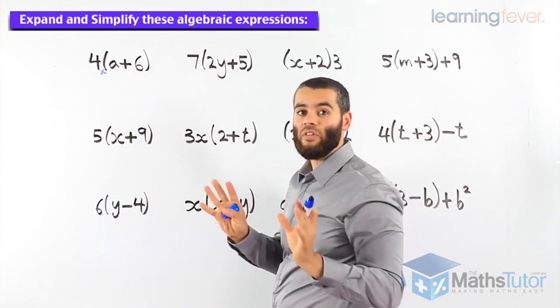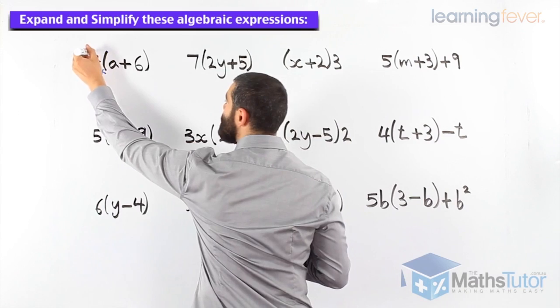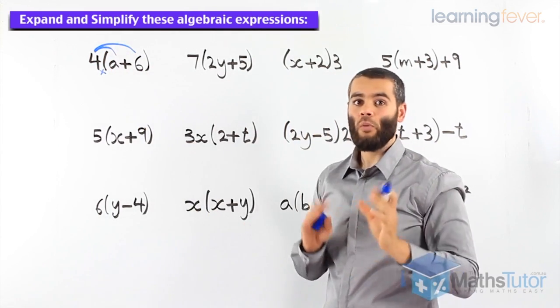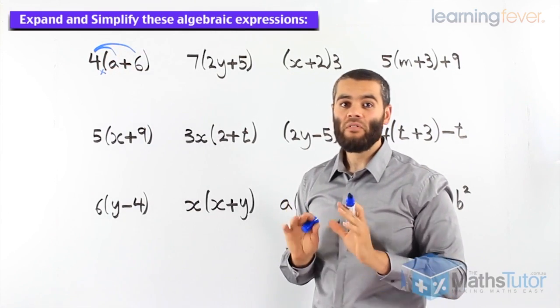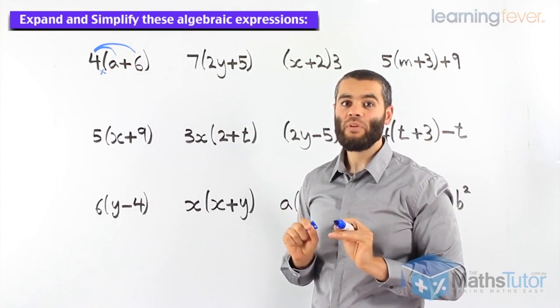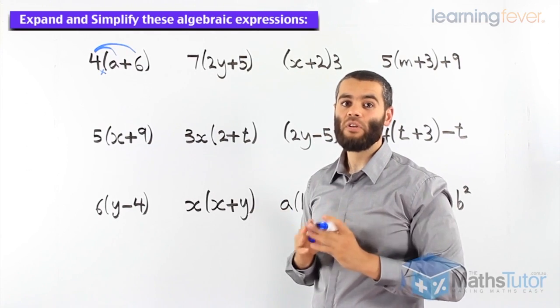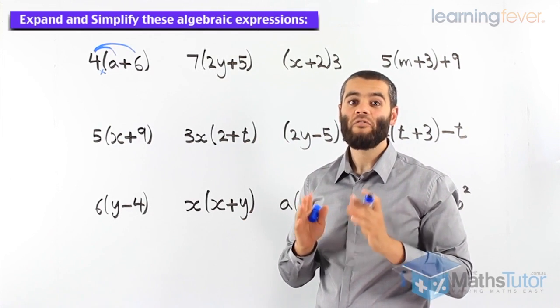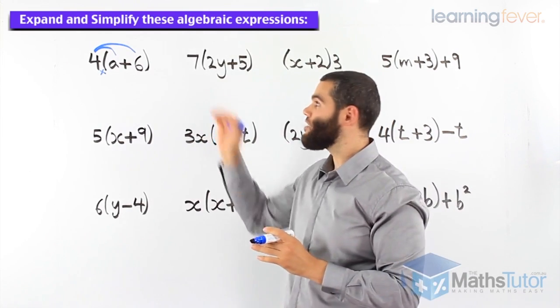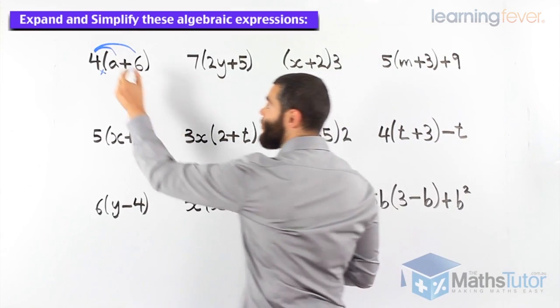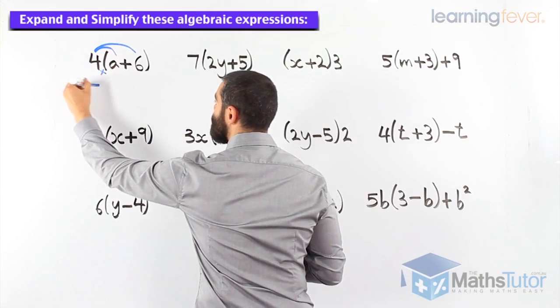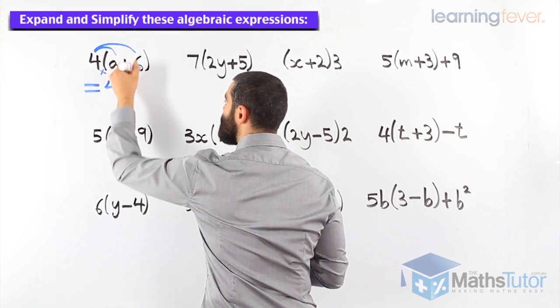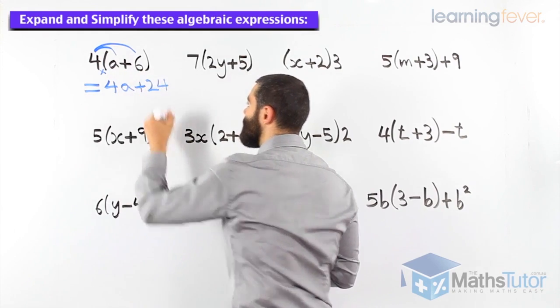Four multiplied by everything inside, meaning that four times a, and four times positive six. I always tell students, show the arrows. It's very, very helpful. These little bits and pieces of working out make it much easier later on when you come to revise, and even if you make a mistake, you may get marks for showing your working out. Those arrows are part of your working out. So, four times a, four a, four times six, twenty-four.